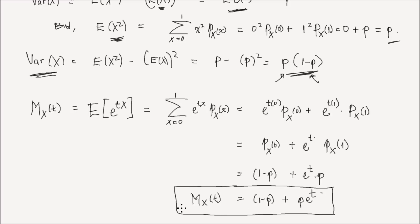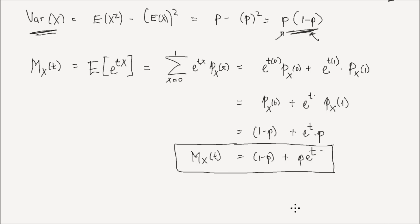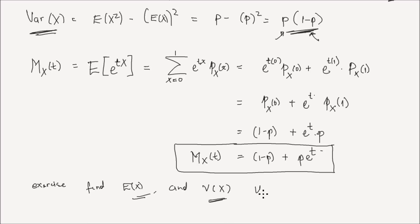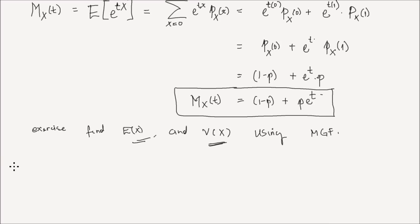Now we have the expected value, the variance, and the MGF of a Bernoulli random variable. For your exercise, try to find the expected value and the variance of this Bernoulli random variable x using the MGF. That's all for Bernoulli random variables — let's go ahead and discuss what we mean by a binomial random variable.